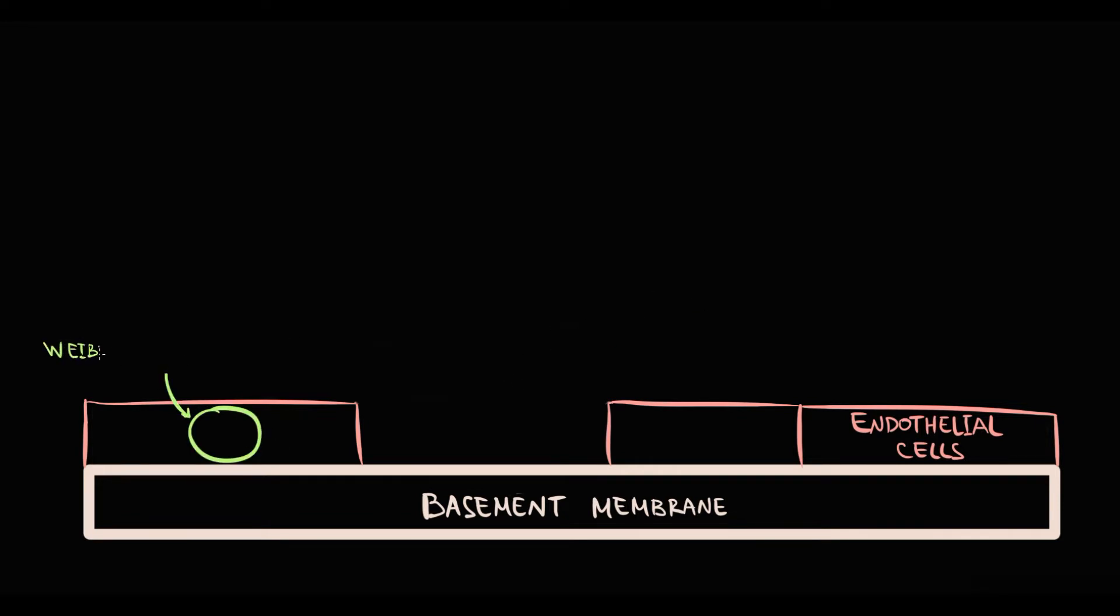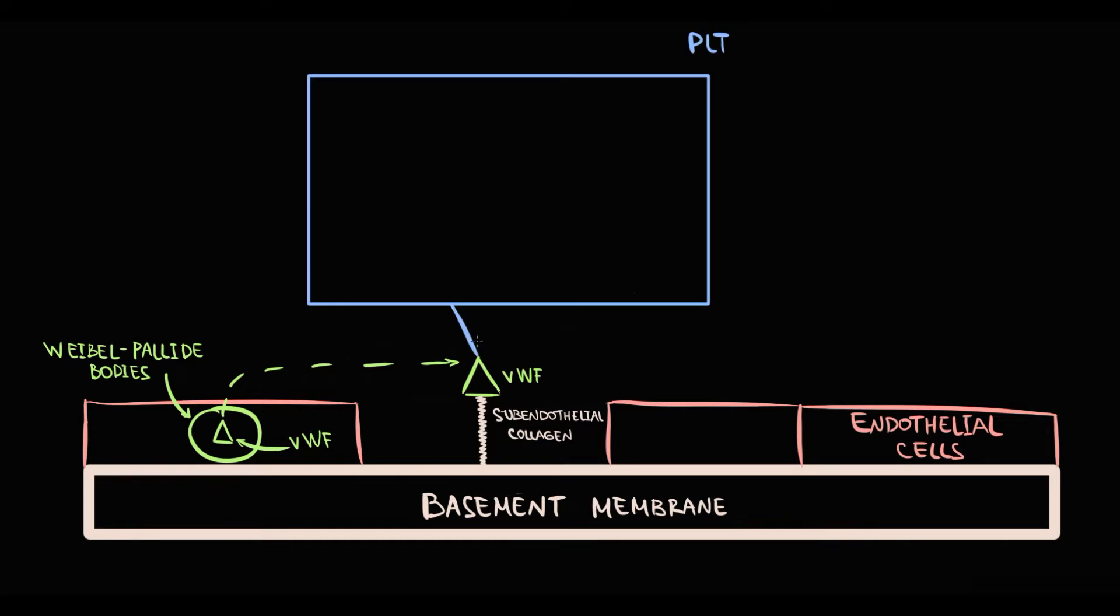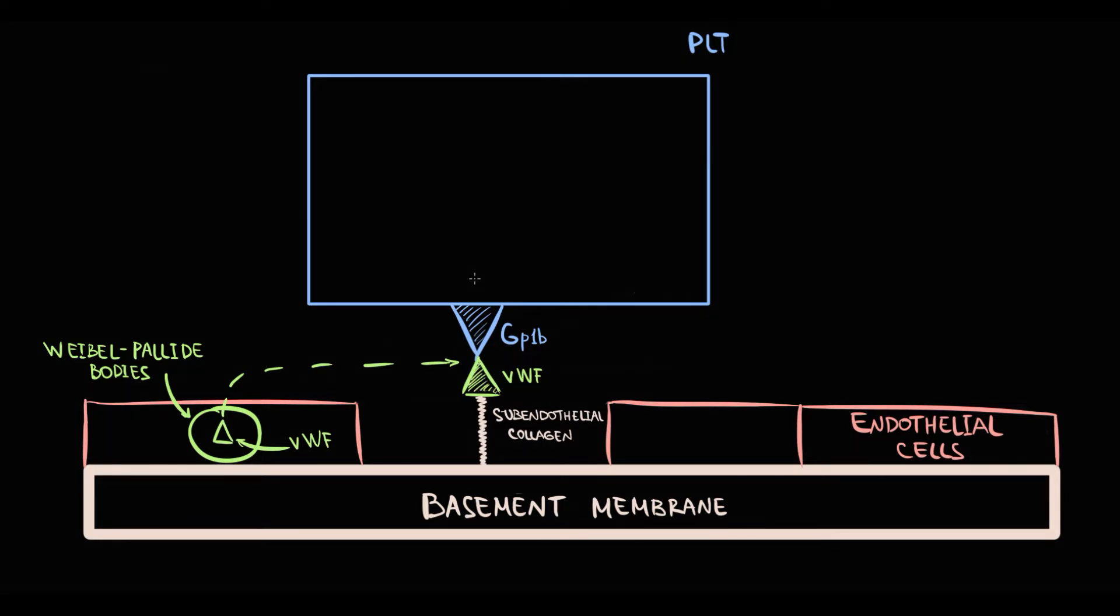In order to do this, endothelial cells release from Weibel-Palade bodies huge amount of von Willebrand factor. In the bloodstream, von Willebrand factor binds to subendothelial collagen under the disrupted endothelial cell. After that, platelets come to the site of injury and by the specific receptor GP1b they bind to von Willebrand factor. And exactly this simple step called platelet adhesion.